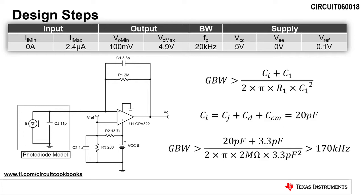Now we need to determine the necessary op-amp gain bandwidth for the circuit to be stable. The minimum op-amp gain bandwidth product is calculated using this inequality. C_L is the sum of the photodiode junction capacitance, Cj, the differential input capacitance of the op-amp, Cd, and the common mode input capacitance of the op-amp, Ccm.